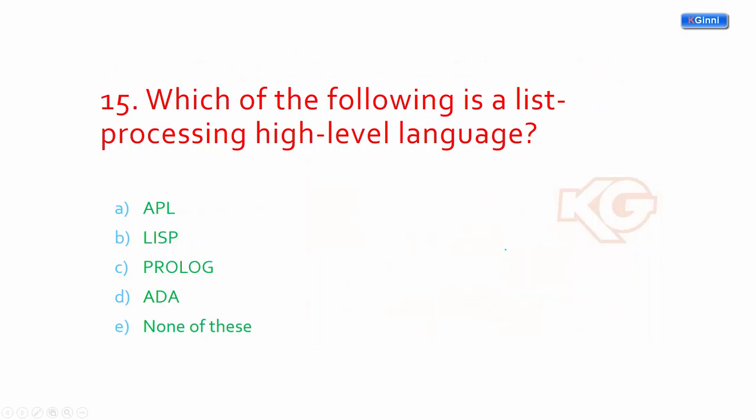Which of the following is a list-processing high-level language? By seeing the list, you can clearly spot that it should be LISP. L is for list, and it also is used for artificial intelligence. The option should be B.